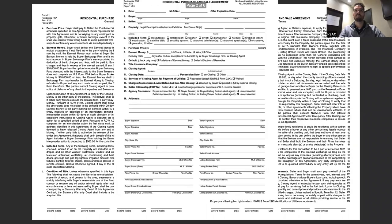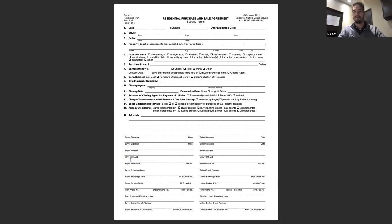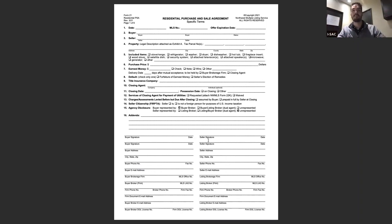The bottom of the form has buyer and seller signatures, address, phone number, and email. Technically, these contact fields aren't required for the document to be contractual, but if you don't include them, escrow will call you for the information later. Might as well put it on the contract now to save yourself work.